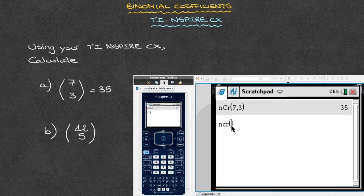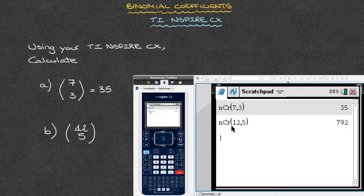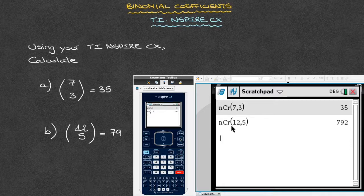I would simply type 12, then 5, and I then click Enter. And we're done. We can now see that the second binomial coefficient is equal to 792.